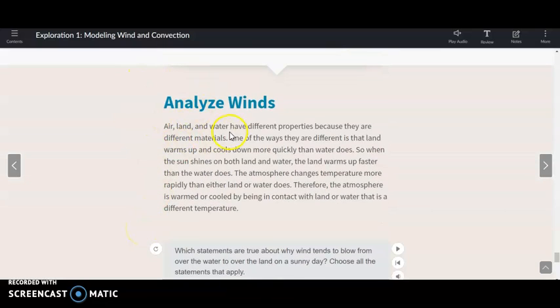Analyze winds. Air, land, and water have different properties because they are different materials. Mind blown. I just learned something. One of the ways they are different is that land warms up and cools down more quickly than water does. You might not have known that, but it's definitely true. You probably do it. Anyhow.